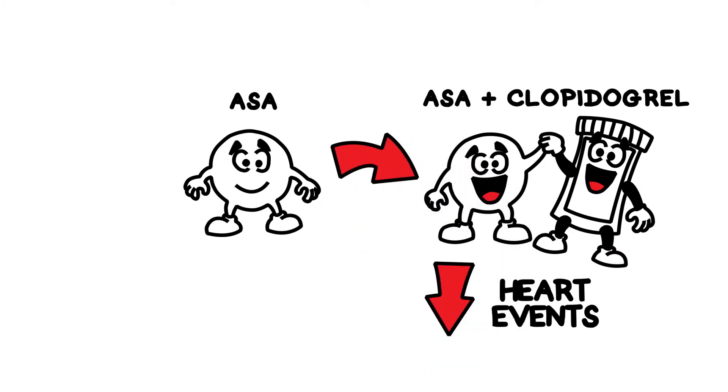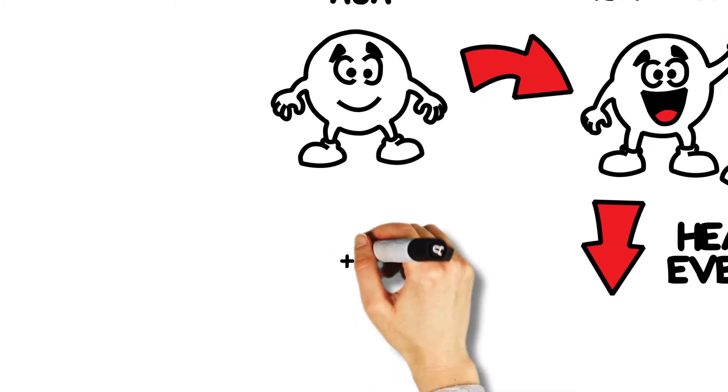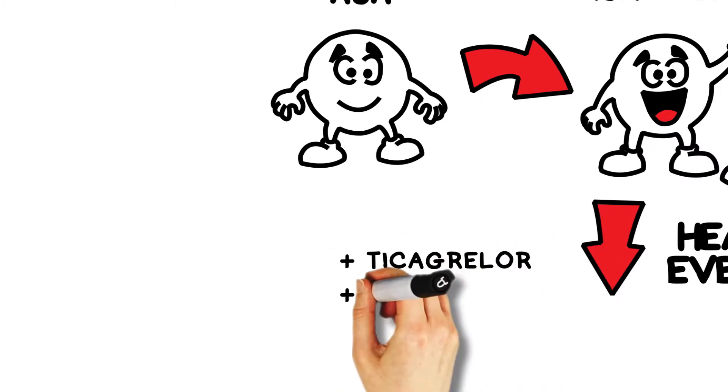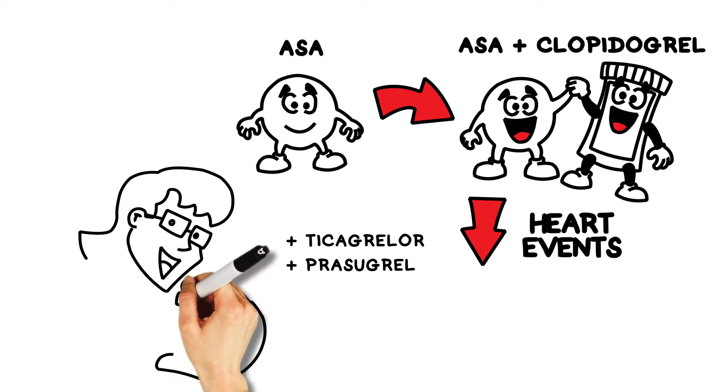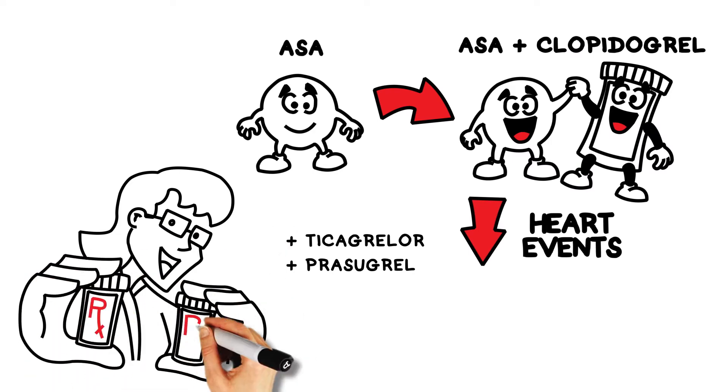In some patients, combining aspirin with Ticagrelor or aspirin with Prasugrel provides even more benefit, an additional 16 to 18 percent decrease in events.